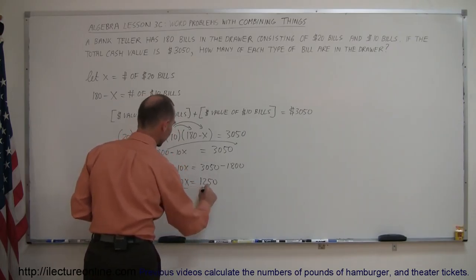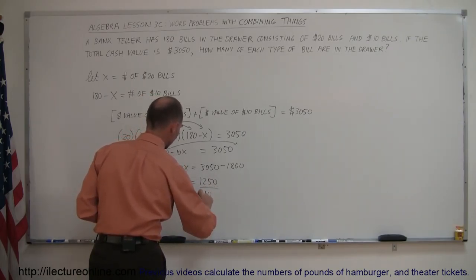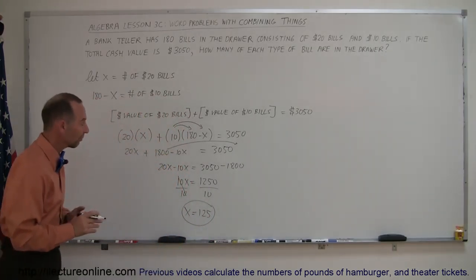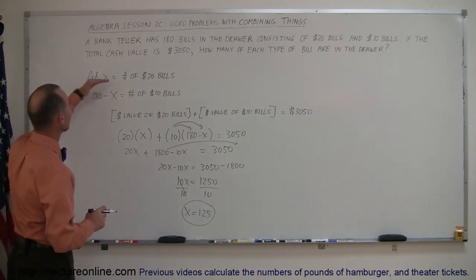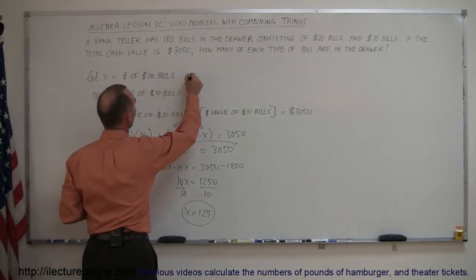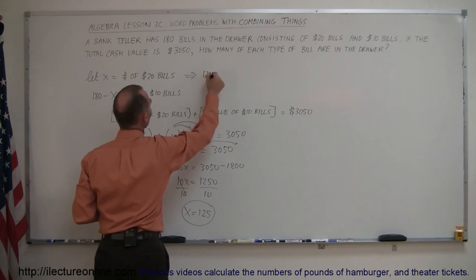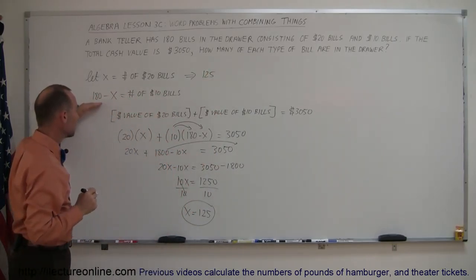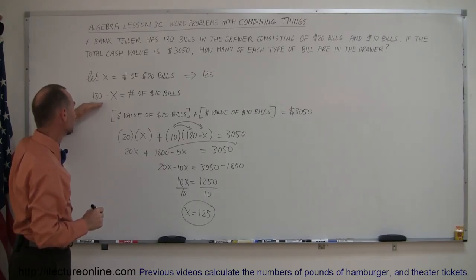So now we divide both sides by the numerical coefficient of x. That cancels out, and x equals 125. Now we'll go back and see what x was defined as. x was defined as the number of $20 bills, which means we had 125 $20 bills. And 180 minus 125, that is 55.